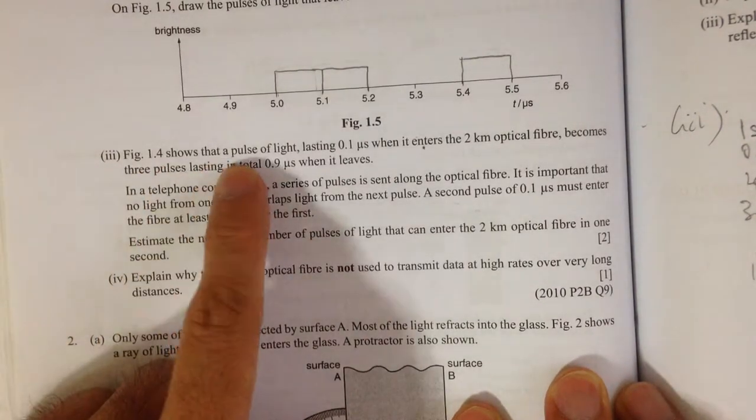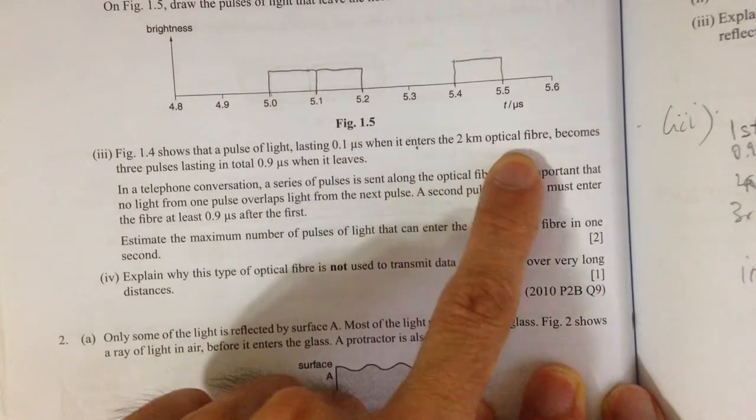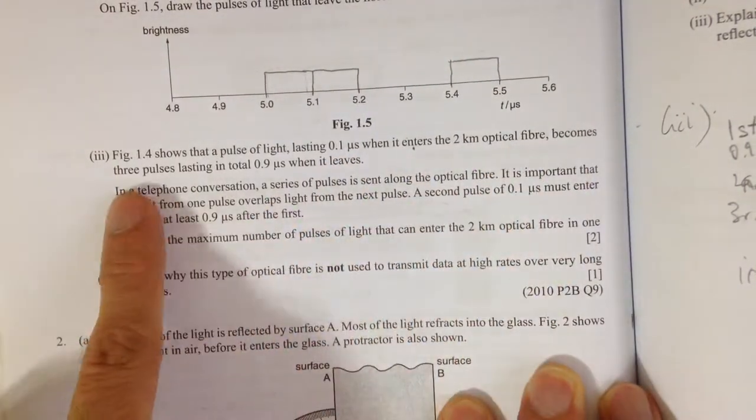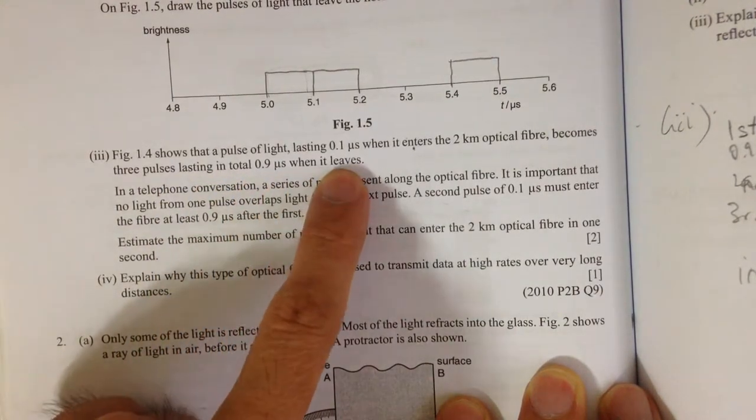Figure 1.4 shows a pulse of light lasting 0.1 microsecond when it enters a 2km optical fiber, becomes 3 pulses lasting in total 0.9 microseconds when it leaves.